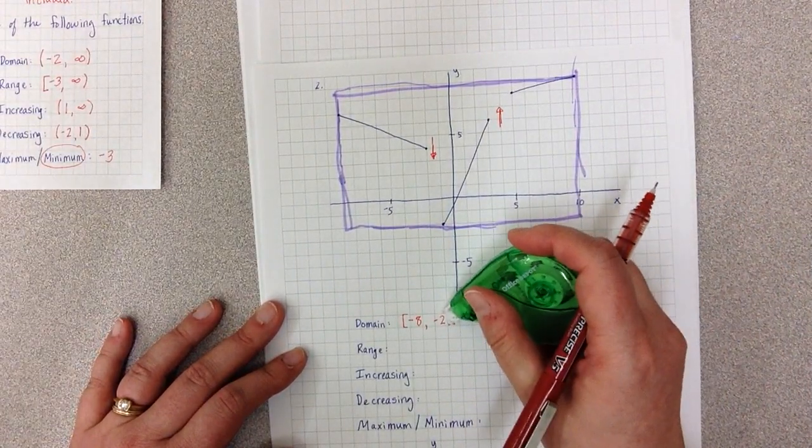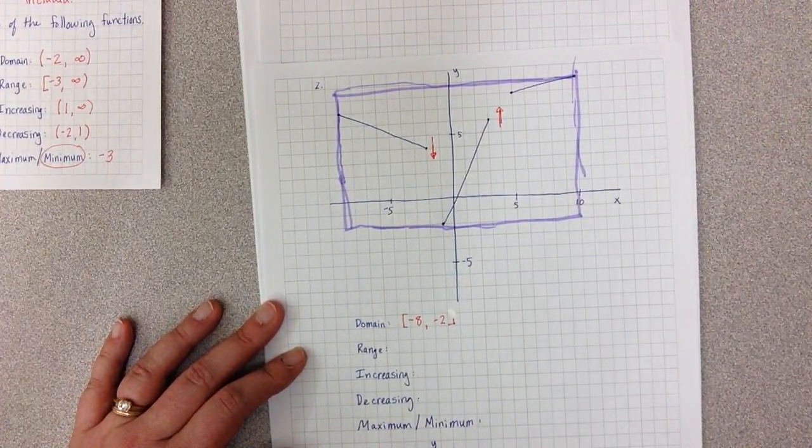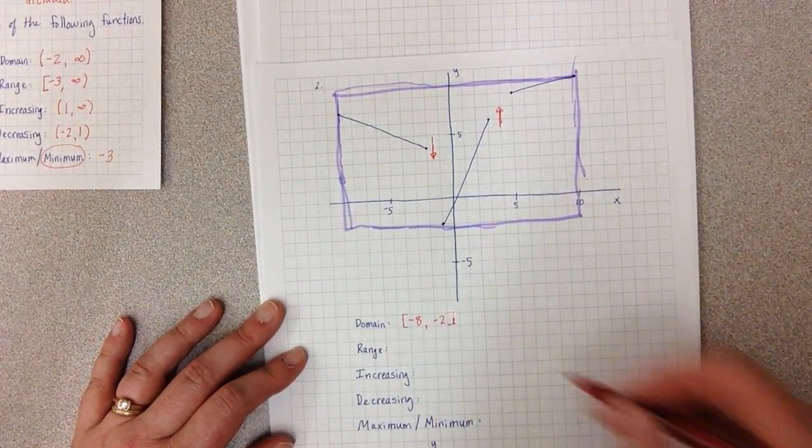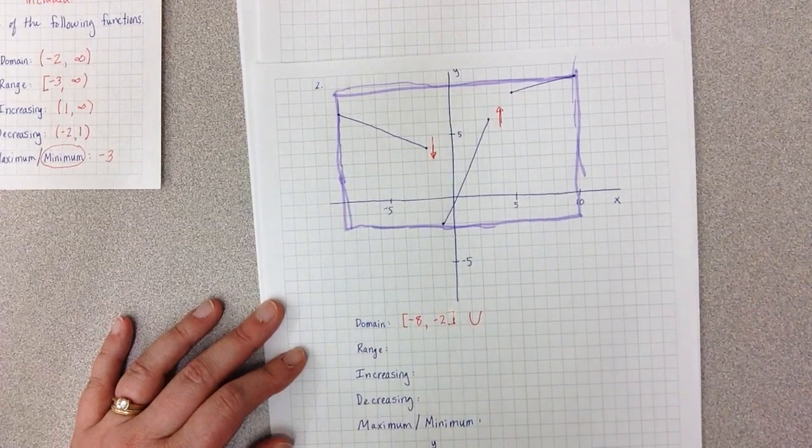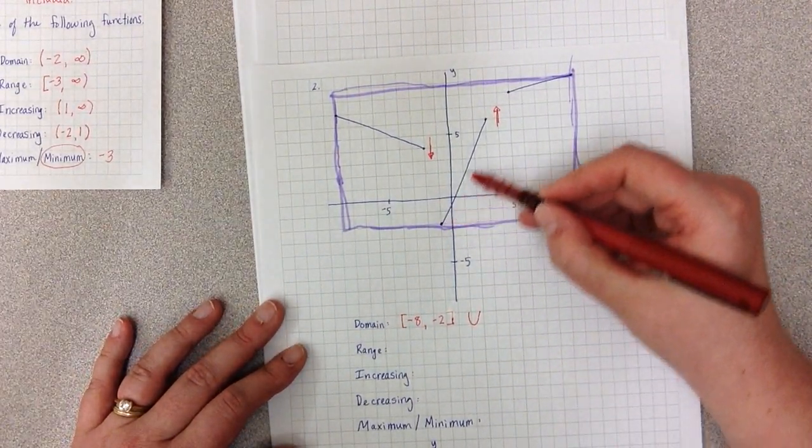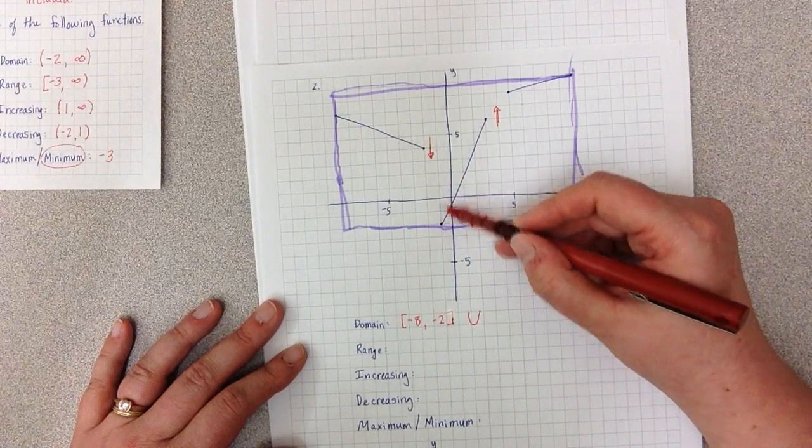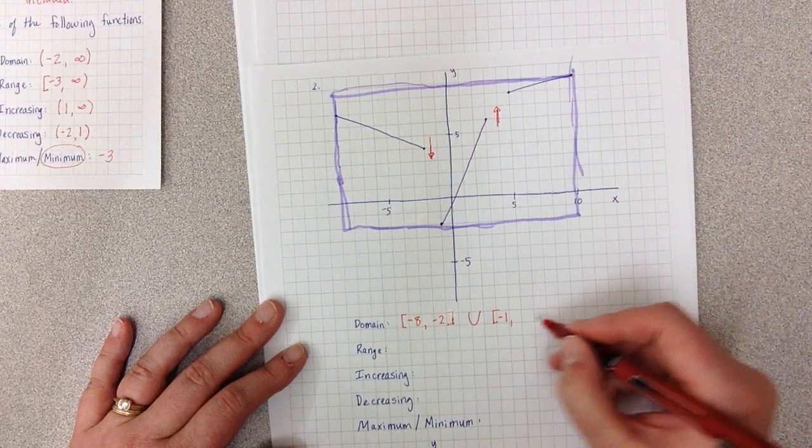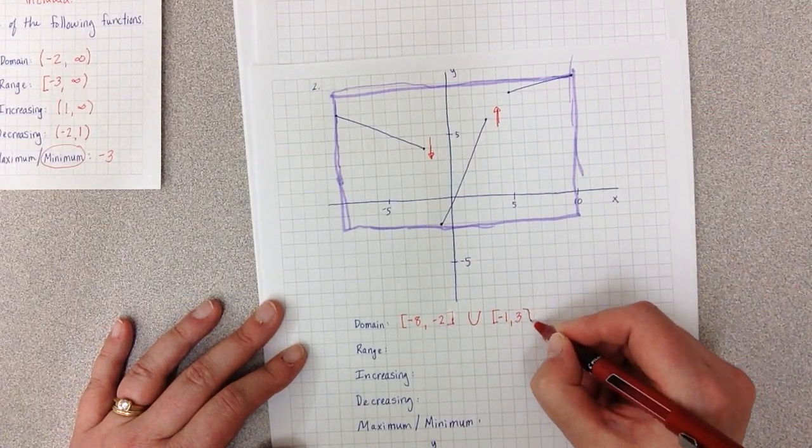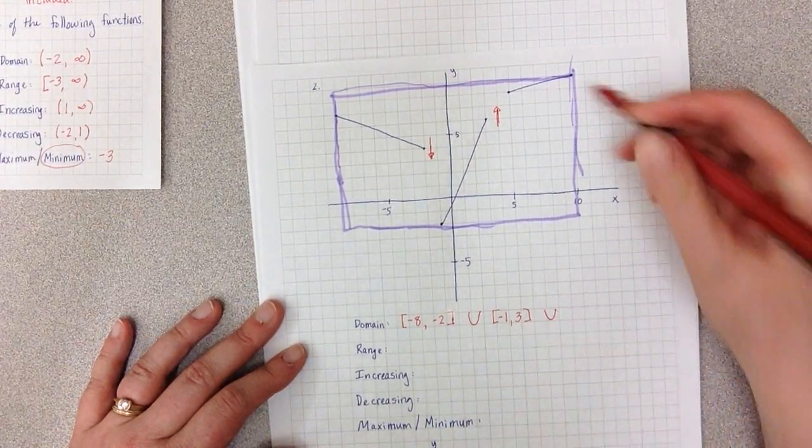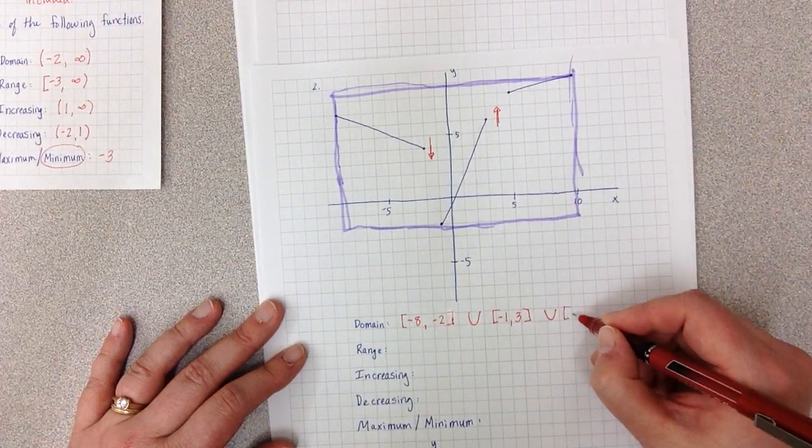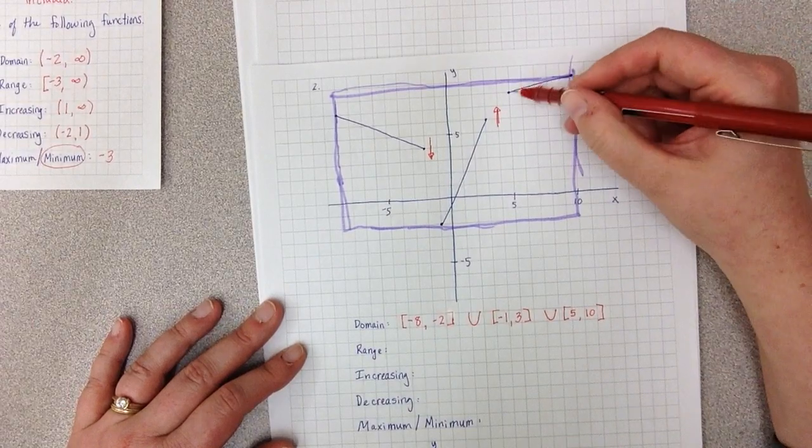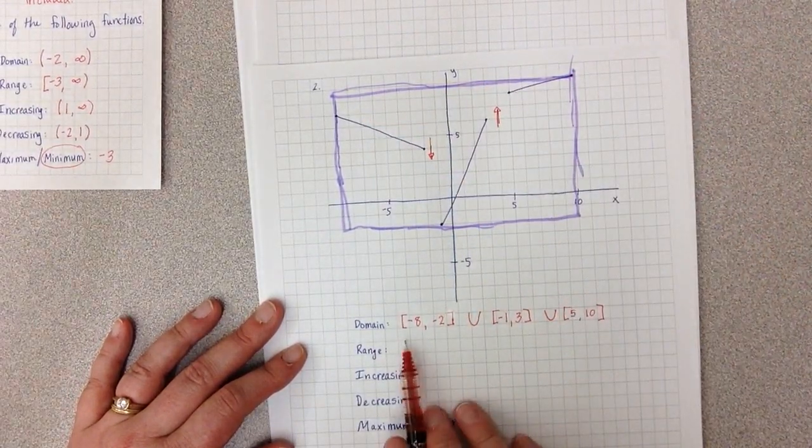Now, there's a symbol we have in math to indicate that we kind of have more than one answer that we're working with. And that symbol is this U. It means union. So now I'm going to do my next piece. Well, my next piece starts at negative 1 and goes until 3. Union, because I have a third piece, starts at 5 and goes to 10. All of these are closed circles, which means all of these have brackets.